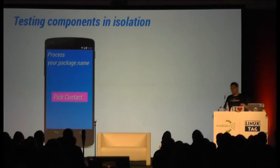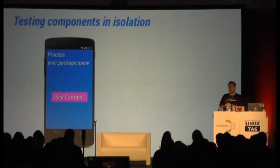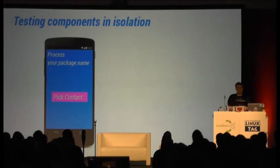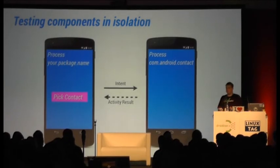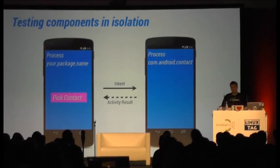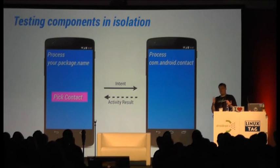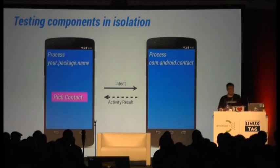If you think about Android, this becomes even more of a problem. If you want to test a component in isolation — say you have an app where users can pick a contact using the native Android contact picker — as soon as you click on 'pick contact', you create an intent, send it out, and the instrumentation forwards it to start the contact picker in another process. But as soon as you leave that process, you can't interact with it because it runs in a different process.